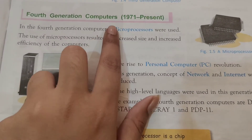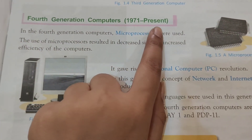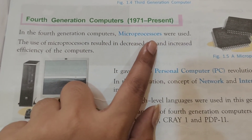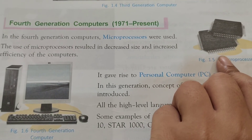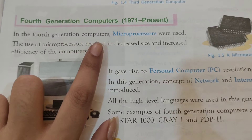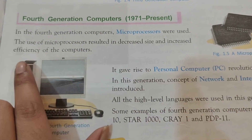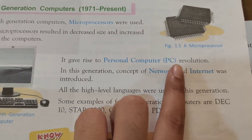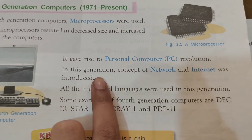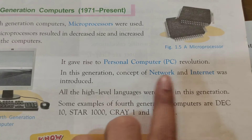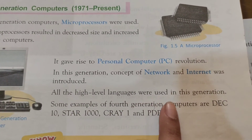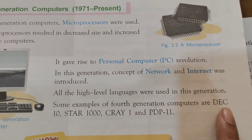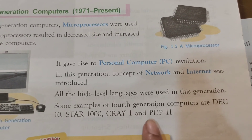Fourth generation computers is from 1971 and continues to the present time. In the fourth generation computers, microprocessors were used. Here you can see the photo of a microprocessor. The use of microprocessors resulted in decreased size and increased efficiency of computers. It gave rise to the personal computer — the PC revolution. In this generation, the concept of networks and the internet was introduced. All high level languages were used in this generation. Some examples of fourth generation computers are DEC-10, Star-1000, Cray-1 and PDP-11.